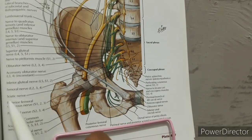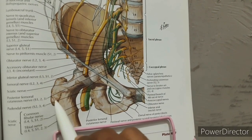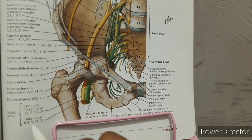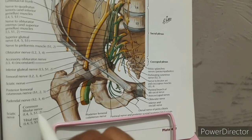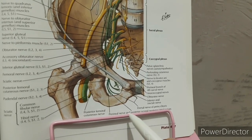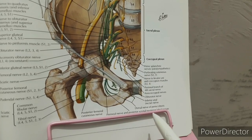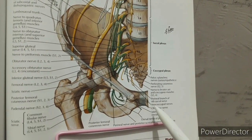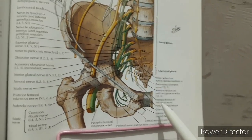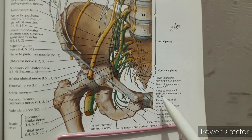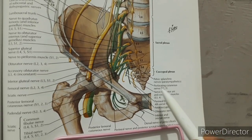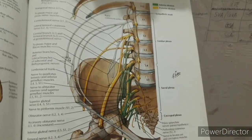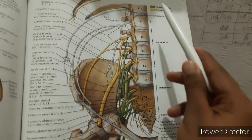Continuing the diagram: inferior gluteal nerve L5, S1, S2; femoral nerve L2, L3, L4; sciatic nerve and posterior femoral cutaneous nerve S1, S2, S3; pudendal nerve S2, S3, S4; common fibular nerve L4, L5, S1, S2 (the thickest nerve); tibial nerve L4, L5, S1, S2, S3. Also shown: dorsal nerve of penis and clitoris, inferior anal nerve, anococcygeal nerve, perineal branch of fourth sacral nerve, nerve to levator ani and coccygeus muscle S3-S4, pelvic splanchnic nerve (parasympathetic), and the sympathetic trunk with anterior and posterior divisions.